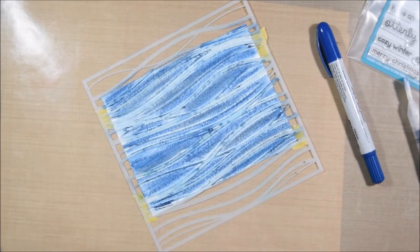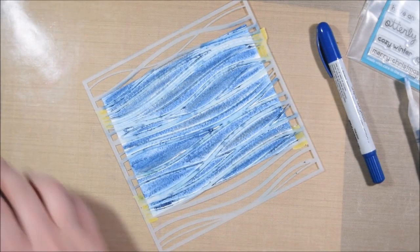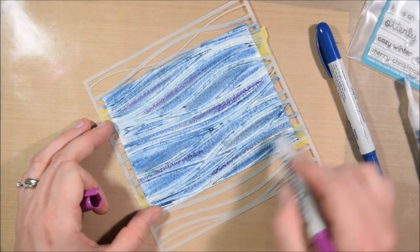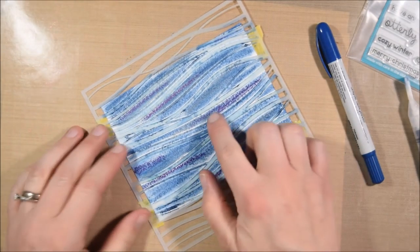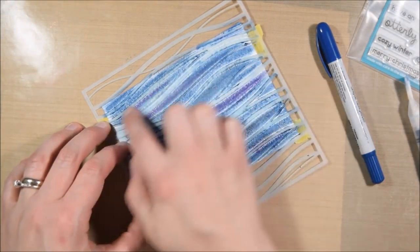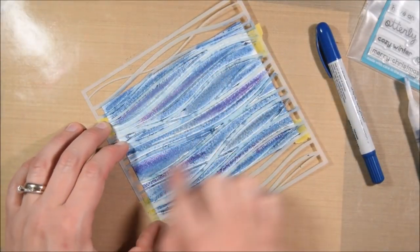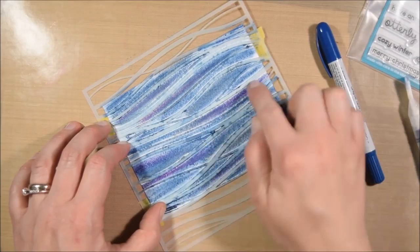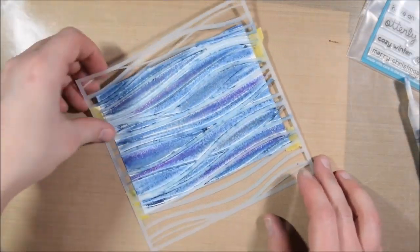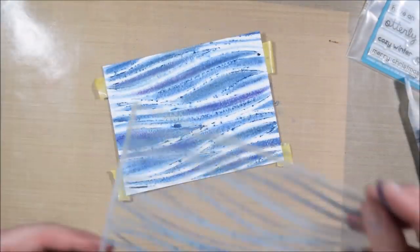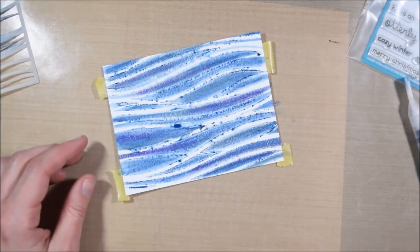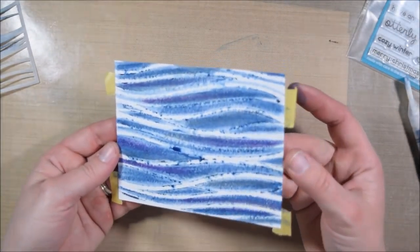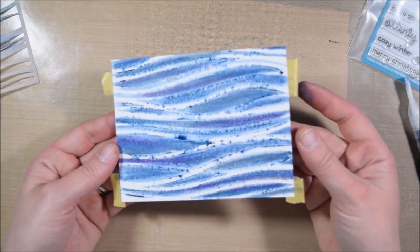When I blended it out I felt like I lost a lot of the silver so I decided to go back in with more silver and then I also added purple. At the time of recording this video I didn't have a lot of distress crayons but I recently picked up a few more on clearance, 75% off at a local shop. I blended out just a little bit of purple into it so it had some interest and some more of that silver.